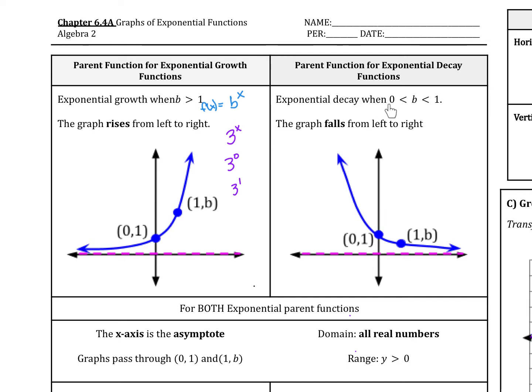Now when we have an exponential decay, that's when b is between 0 and 1. So like a half, 1 fourth, 1 seventh, things like that. What's going to happen is the graph is going to fall from left to right. This is still going to be 1 over b, and we still will have 0 comma 1.